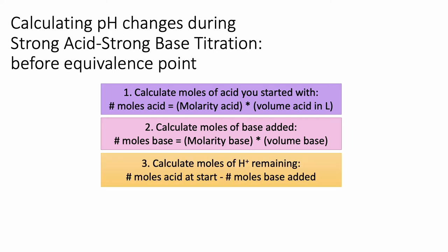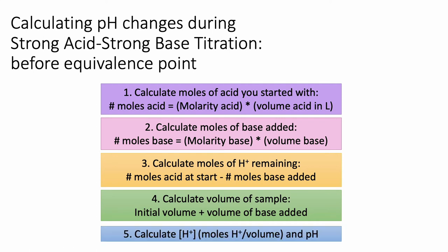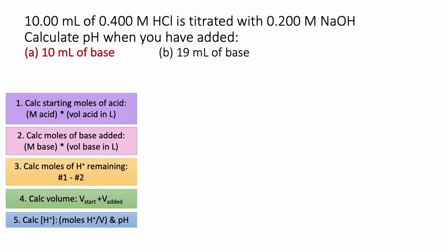Step three is to calculate how many moles of H+ we have left — that's moles of acid (step 1) minus moles of base added (step 2). Step four is to calculate the total volume by adding the starting volume plus the volume of base added. Step five is to calculate the H+ concentration — moles from step 3 divided by volume from step 4 — and then calculate pH as the negative log of H+.